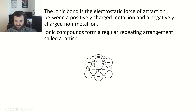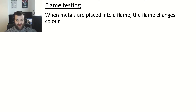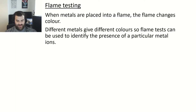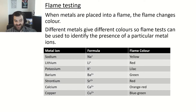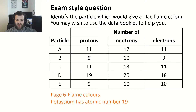Staying with the topic of ions, you can also be asked about flame testing. You take a metal solution or piece of metal, place it in a flame, and the flame changes colour — different metals give different colours. Flame tests are used to identify which metal is present and the results are found on page six of the data booklet. For example, a lilac flame suggests potassium, which has an atomic number of 19, meaning it has 19 protons.